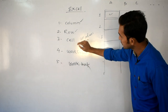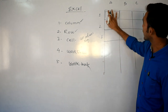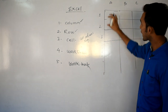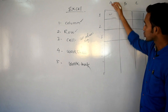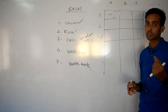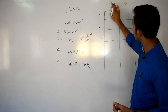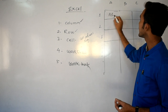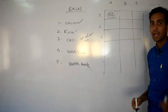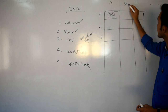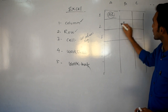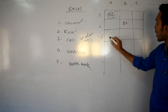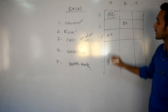That intersection is known as a cell. How do you recognize a cell? Column A and row number 1 — this cell is called A1. Column B and row number 2 — this cell is called B2. Column A and row number 3 — this is called a cell address.